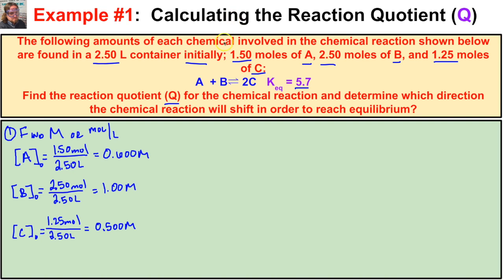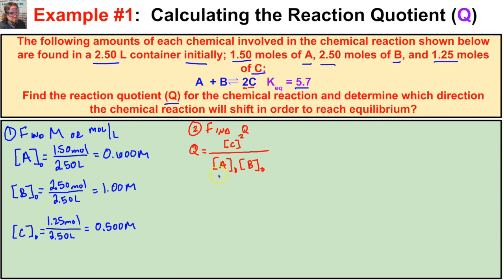Now we write our Q expression. Q equals the initial concentration of C raised to the second power — because there's a coefficient of 2 — divided by the initial concentration of A times the initial concentration of B. Plugging in the values: Q = (0.500)² / (0.600 × 1.00). We leave off units since Q is unitless.